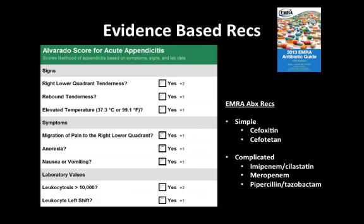As far as antibiotics go, the EMRA Antibiotics Guide recommends cefoxitin or cefotetan for simple appendicitis. Note that ciprofloxacin/metronidazole, which we commonly use, is not included in their recommendations. For complicated appendicitis — which is gangrenous, perforated, abscess, phlegmon, or in immunocompromised patients — the big guns are recommended.